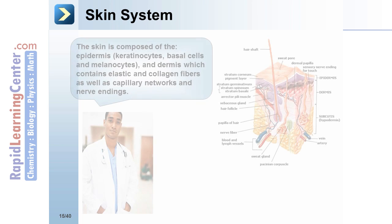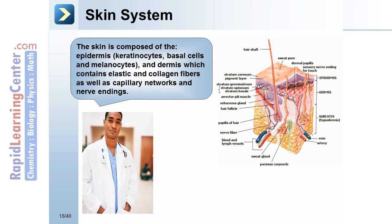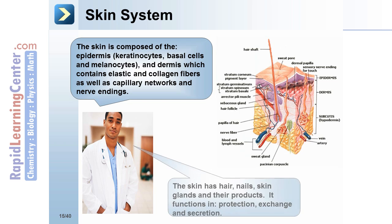Skin system: the skin is composed of the epidermis — including keratinocytes, basal cells, and melanocytes — and the dermis, which contains elastic and collagen fibers, bone marrow, capillary networks, and nerve endings. The skin also has hair, nails, skin glands and their products. It functions in protection, exchange, and secretion.